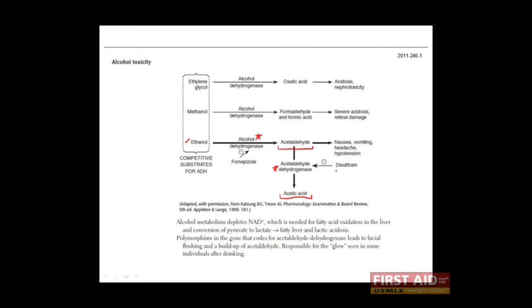If acetaldehyde dehydrogenase is inhibited, for example by a drug known as disulfiram, acetaldehyde can begin to accumulate in the body, which can result in nausea, vomiting, headache, and even hypotension.